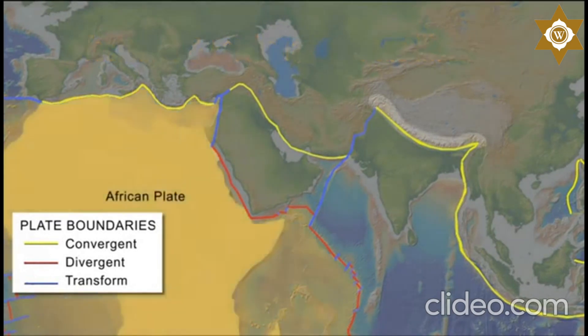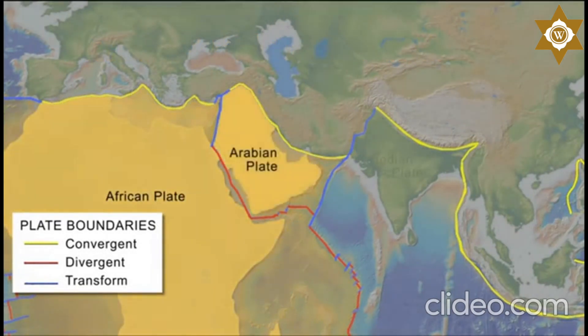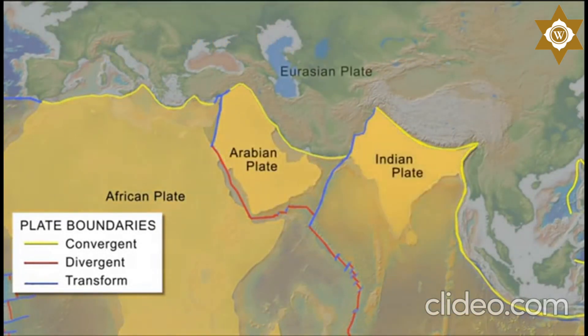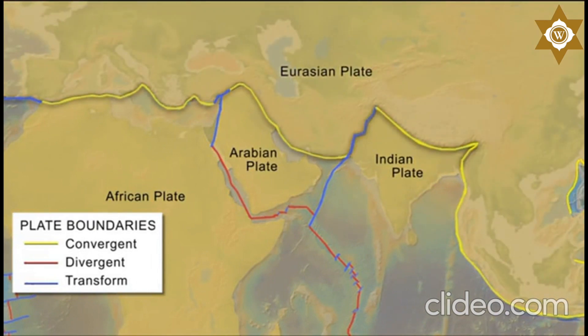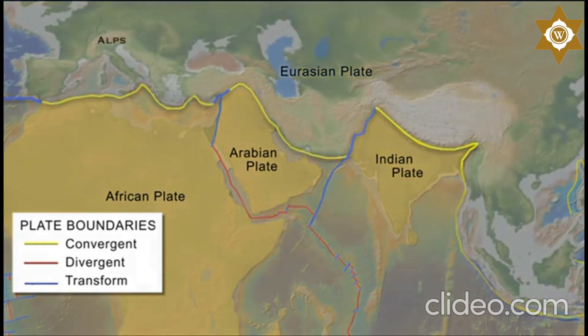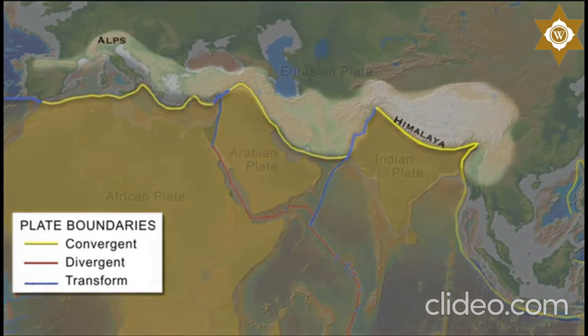The African, Arabian, and Indian plates collide with the southern margin of the Eurasian plate along a 1,200 kilometer convergent boundary. This has resulted in a mountain chain that stretches from the Alps to the Himalayas.